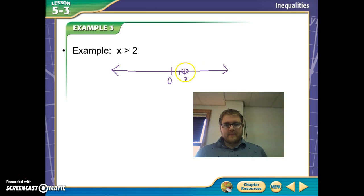And we are just going to shade everything above 2. So all these values above 2 are possible values for X. And that's the graph, X greater than 2 on the number line.